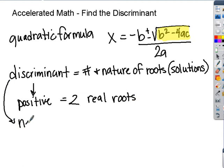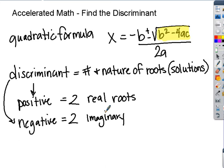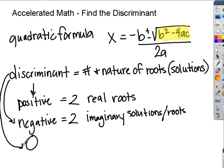If you work through and your discriminant is negative, meaning you've got some negative number, then you have two imaginary roots or solutions. And then we also have a discriminant of zero. If our discriminant is zero, we have one real root — one real solution. So roots and solutions are interchangeable.